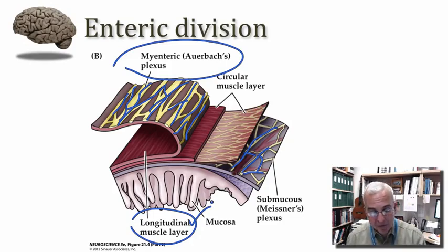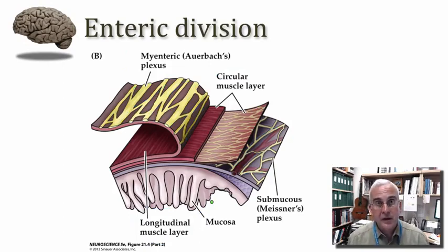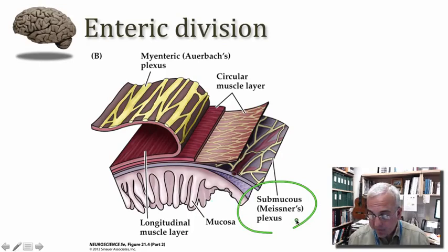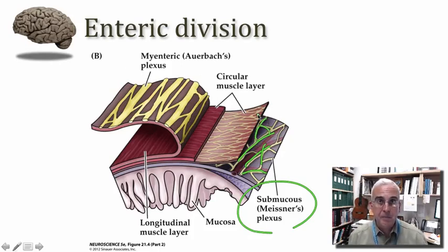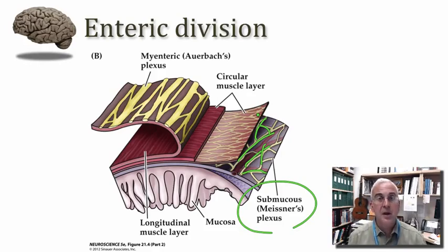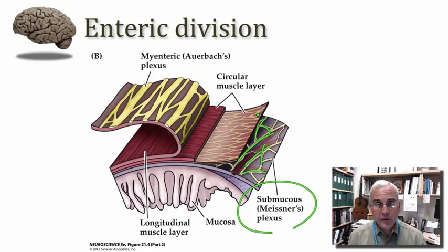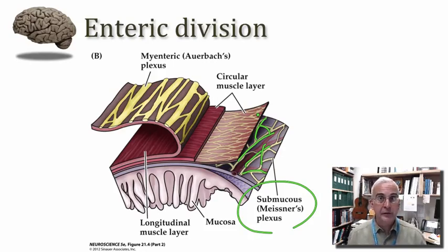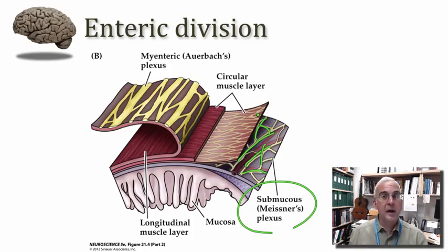There is also a deeper plexus found in close association with the mucosa — the submucosal plexus — which coordinates the secretions of glands important in mediating digestion. These two networks can function in a semi-autonomous way: even with damage to the spinal cord or supplying nerves, this network can still function, though not well coordinated with the needs of digestion. There is definite input to the enteric division from both sympathetic and parasympathetic sources, yet a certain degree of autonomy is recognized.